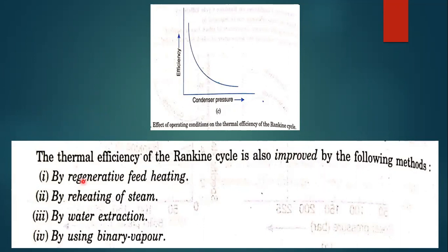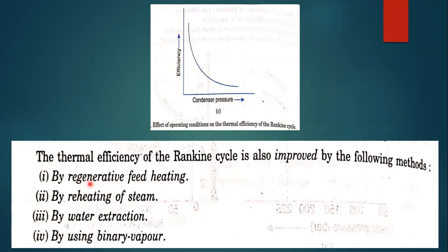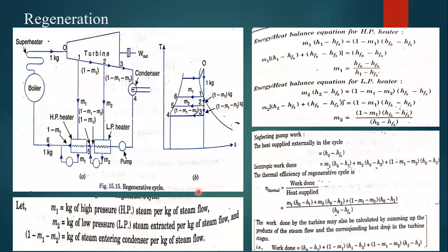The Rankine cycle efficiency - one is regenerative feed heating method and the other one is reheating. Simply we will call this method as regeneration method and this method as reheating method. Let us discuss now or in next class, depends on you. Tomorrow you will come to college? Definitely please bring steam tables.